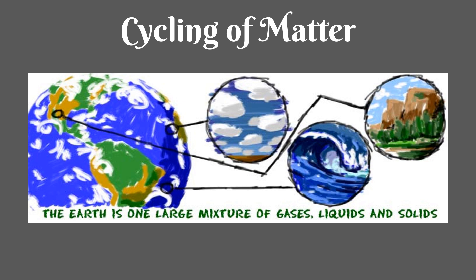Now let's talk about matter. Matter is any substance that has mass and takes up space. All biotic and some abiotic factors are made of matter. Matter is constantly cycled between biotic and abiotic parts of the environment. Recall that a food web shows how energy is transferred from one organism to another, but energy gets used up by each organism over time — that's a little different from what we'll discuss with matter cycles.